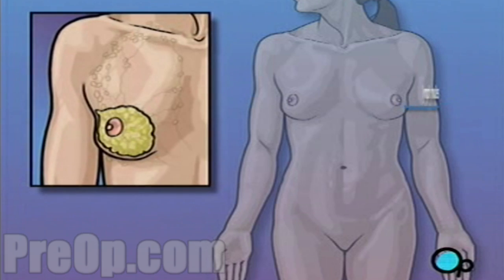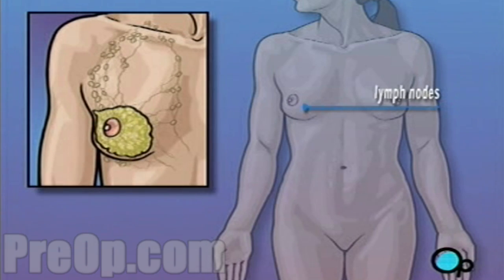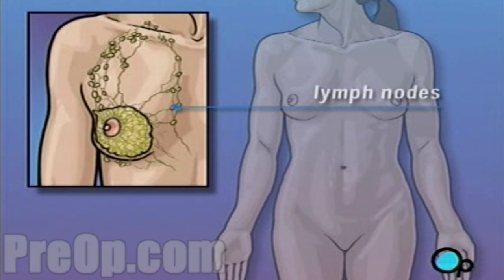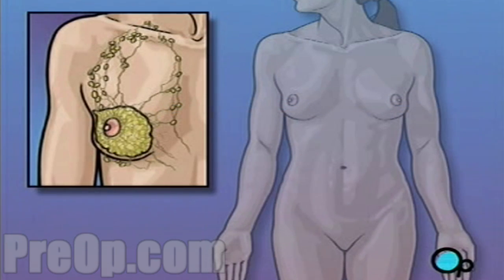Lymph nodes are small junctions that join the vessels that make up the lymphatic system. The lymphatic system circulates a bodily fluid called lymph in the same way that the circulatory system carries blood.